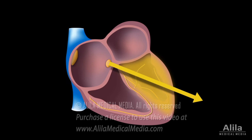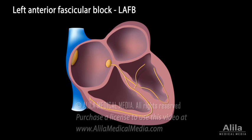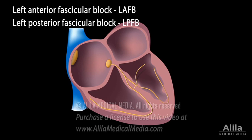Because this vector is responsible for depolarization of the main mass of the larger left ventricle, it represents the cardiac axis, defined as the net direction of electrical activity during depolarization. Left anterior fascicular block (LAFB) and left posterior fascicular block (LPFB) refer to an obstruction in the left anterior or left posterior fascicle, respectively.